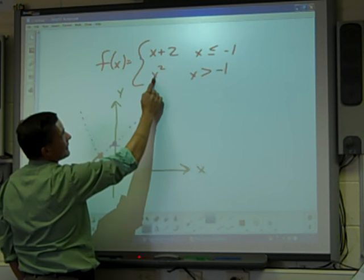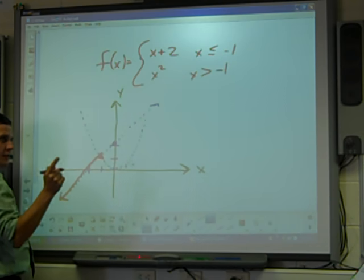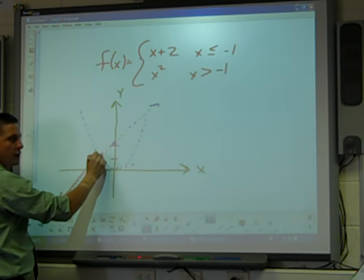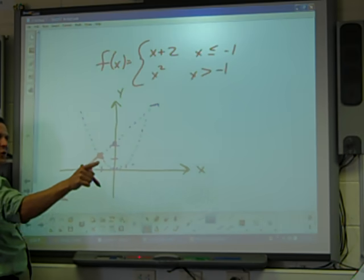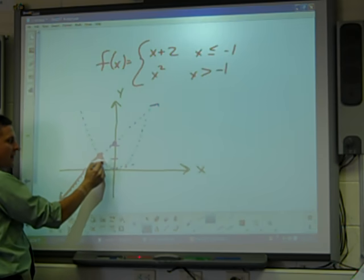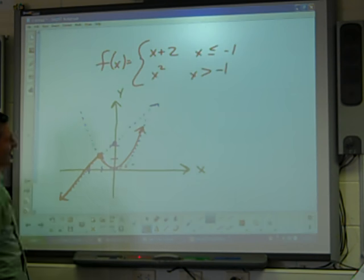And then, we have x squared starting there. If I plug negative 1 in, negative 1 squared is 1. So I put an open circle here. But I'm putting an open circle over a closed circle. So it doesn't look any different. And now I graph the parabola. And now it's easy.